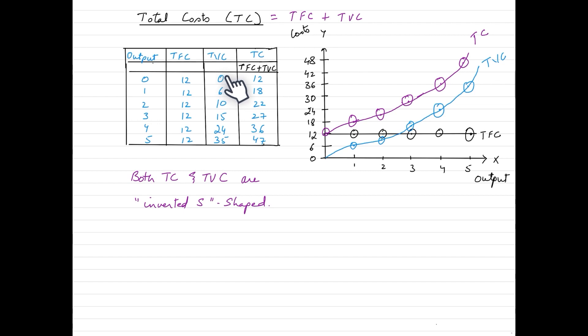Variable cost, on the other hand, would rise as the output rises. As the output is increasing upwards from 0 to 5, variable cost is also increasing from 0 to 35.